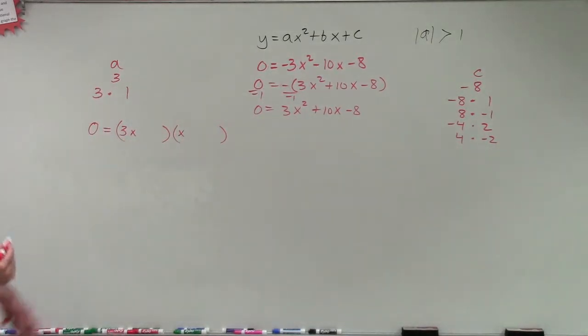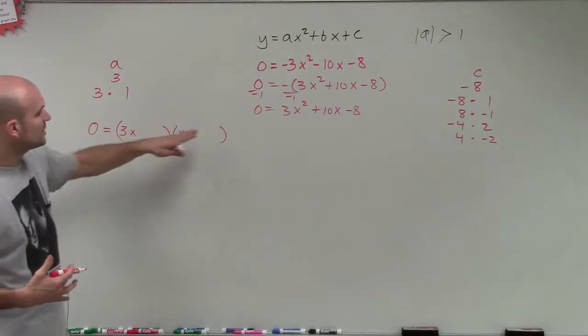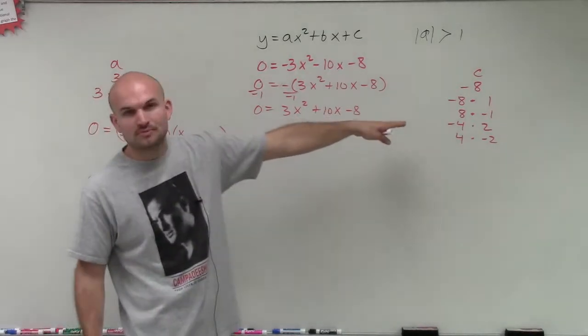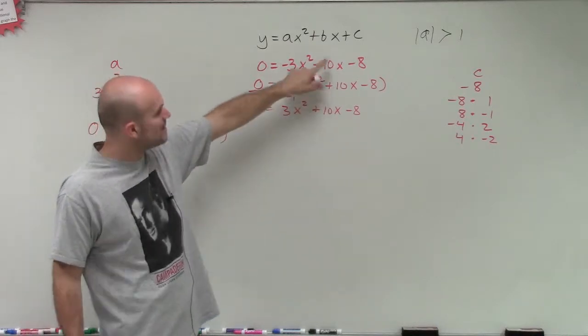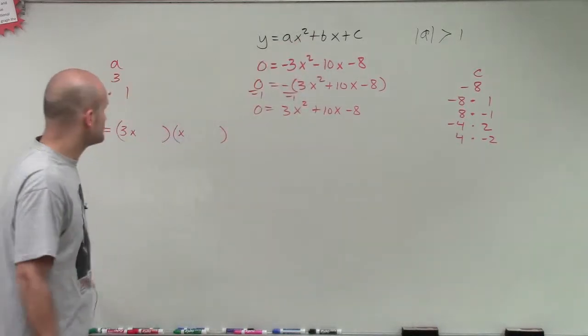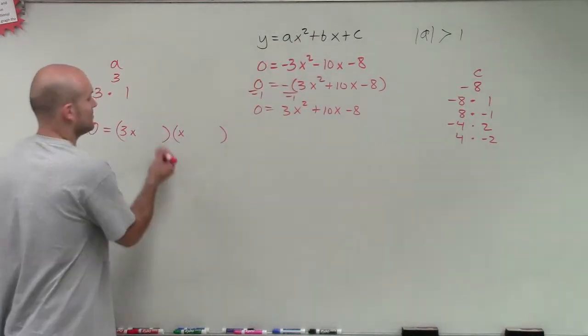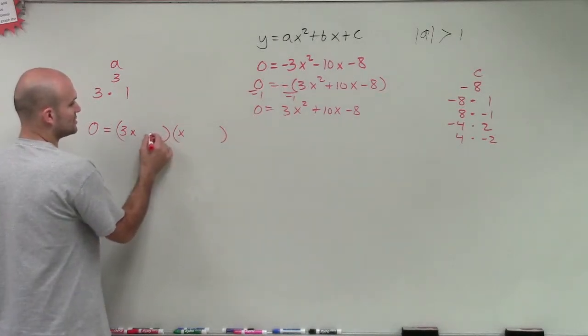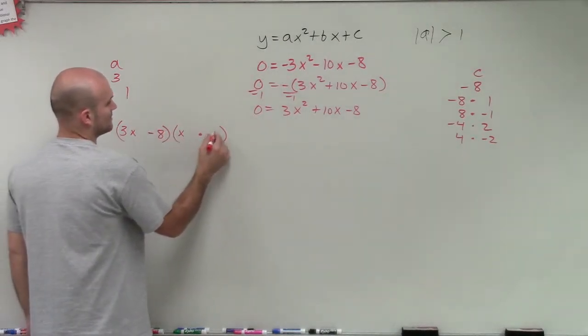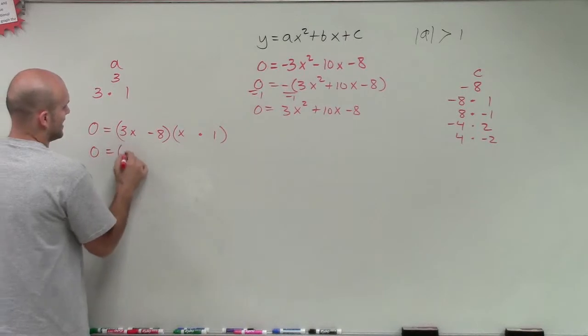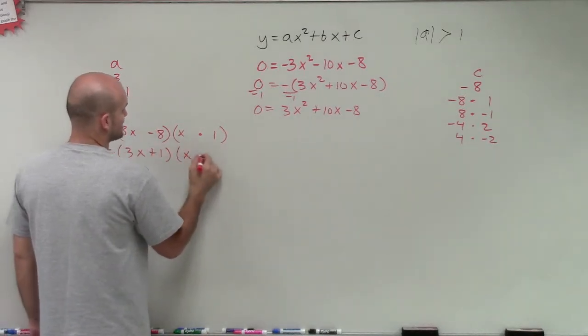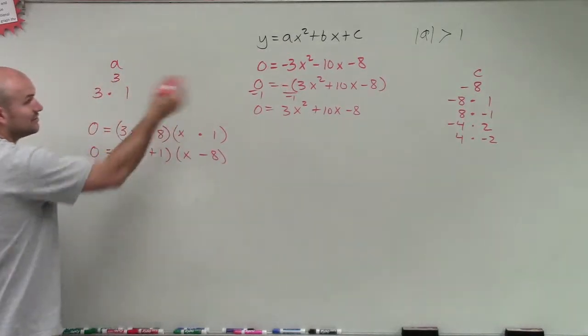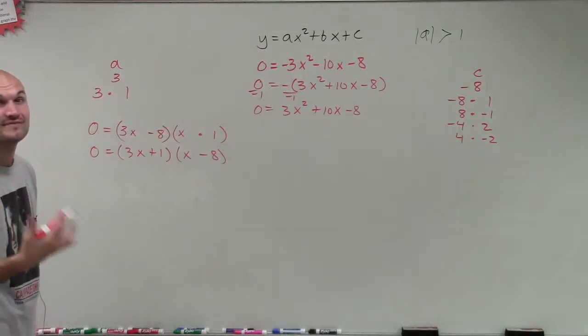And what we want to do is now we want to determine what are going to be our values that are going to multiply to give us C. And these values of C, though, also we need to remember have to add up to negative 10. So we have a lot of different options here. I could write up, if you want to look at all the solutions, you could have negative 8 times 1. You could have 3x plus 1, x minus 8. And then you can just go down the list with all of these different options.